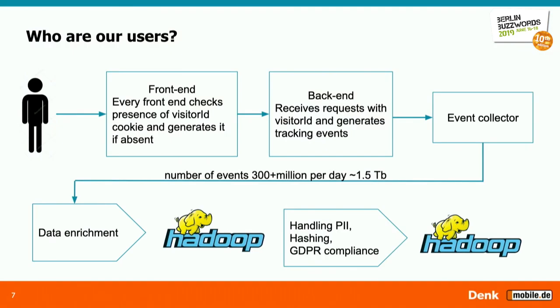We first decided where to start — naturally, with user preferences. This topic broke down into three questions: who are our users? Before building smart data products, we need to understand who they are and how to track them. So we created an event service where every interaction with the front end of our platform is recorded, with a visitor ID attached to each one. This is stored in our Hadoop cluster after enrichment, data cleanup, and compliance checks, and is then available for our data scientists. We generate roughly 300 million interactions with the site per day.